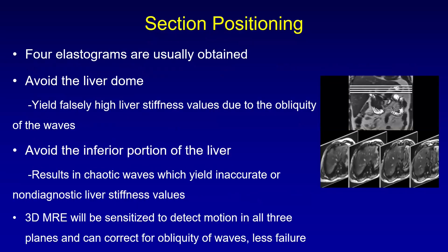Once the passive driver is in position, four elastograms are obtained. We avoid the liver dome because it yields falsely high liver stiffness values due to the obliquity of the waves. We avoid the inferior portion of the liver because it results in chaotic waves which yield inaccurate or non-diagnostic liver stiffness values. Currently we have access only to 2D MRE; 3D MRE is an evolution that will be sensitized to detect motion in all three planes, correct for wave obliquity, reduce failure rates, and may even allow free-breathing acquisition.